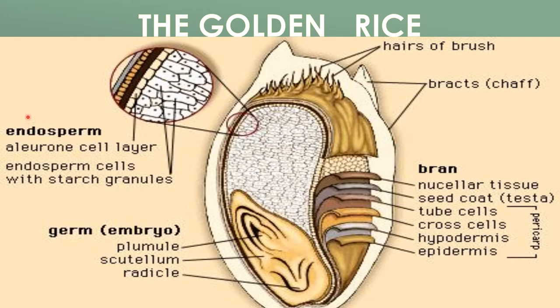Golden rice is a variety of Oryza sativa produced through genetic engineering that biosynthesizes beta-carotene. The main purpose is to provide pro-vitamin A to developing countries where malnutrition and vitamin A deficiency are common. Rice was targeted mainly because it is the global staple food, cultivated for over 10,000 years, providing as much as 80 percent or more of the daily calorie intake of 3 billion people in the world.